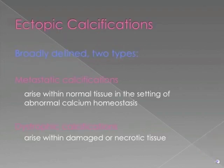Calcifications that occur in the body outside of normally calcified structures are ectopic calcifications. Broadly defined, there are two types of ectopic calcifications: metastatic calcifications, which arise within normal tissues in the setting of abnormal calcium homeostasis, and dystrophic calcifications, which arise within damaged or necrotic tissues.